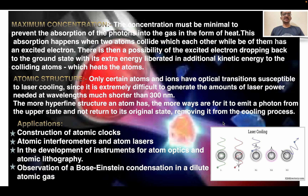Maximum concentration: the concentration must be minimal to prevent the absorption of photons into the gas in the form of heat. This absorption happens when two atoms collide with each other while both have an excited electron, creating a possibility of the excited electron dropping back to the ground state with its extra energy liberated as additional kinetic energy to the colliding atom, which heats the atom.